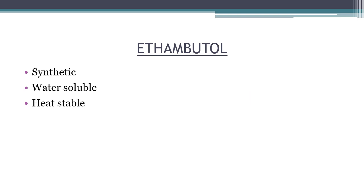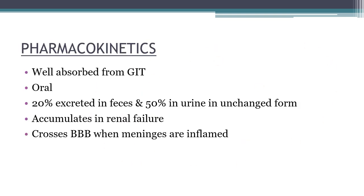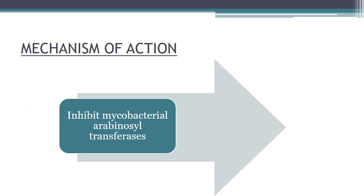Ethambutol is a synthetic, water-soluble, and heat-stable compound. It is well absorbed from the GIT and only an oral preparation is available. Twenty percent of the drug is excreted in feces and 50 percent in urine in unchanged form. Ethambutol accumulates in renal failure; therefore, its dose must be reduced in renal failure. It crosses the blood-brain barrier when meninges are inflamed.